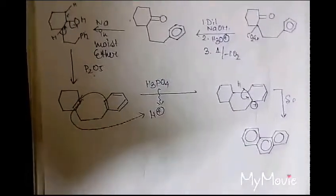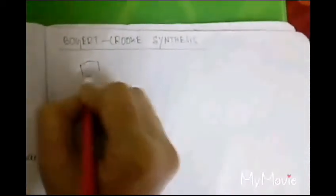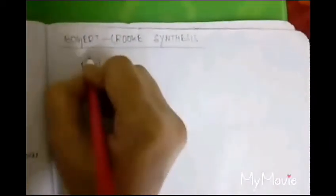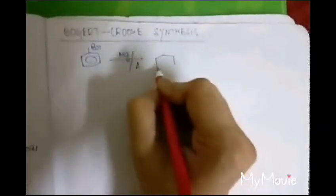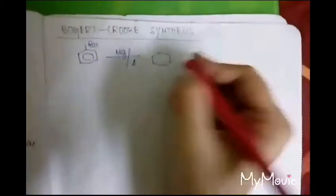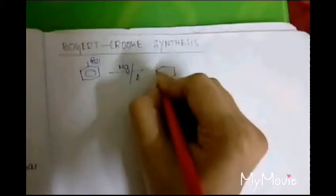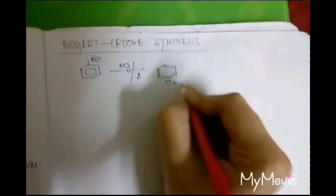The Bogert-Cook synthesis mechanism is simpler. Here also, bromobenzene is taken and treated with magnesium to give an organomagnesium metallic compound. The organomagnesium compound will form, and similarly it will react with an epoxide. In the presence of H2O+, it will give the beta-phenylethyl alcohol, and this will react with HBr to give beta-phenylethyl bromide again.